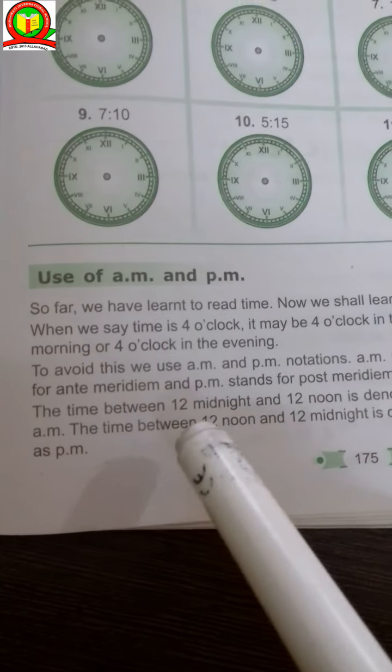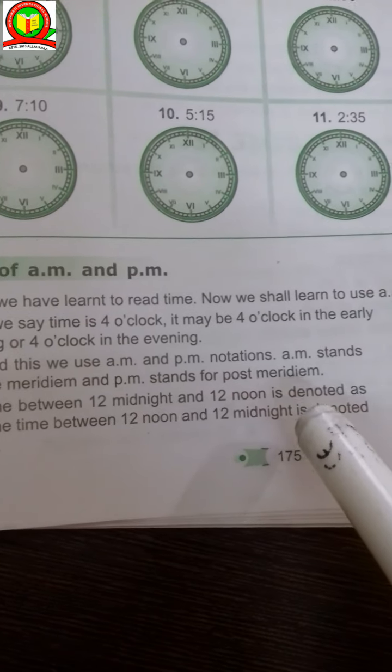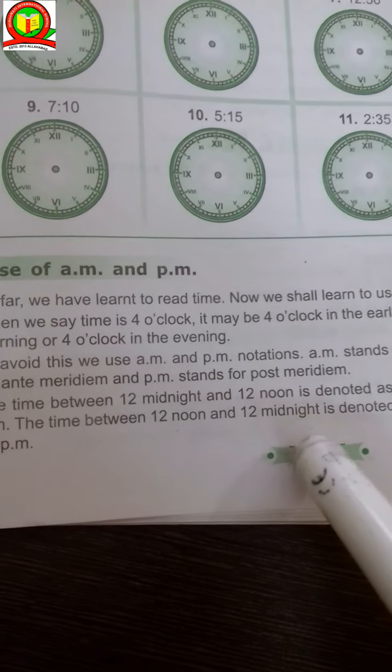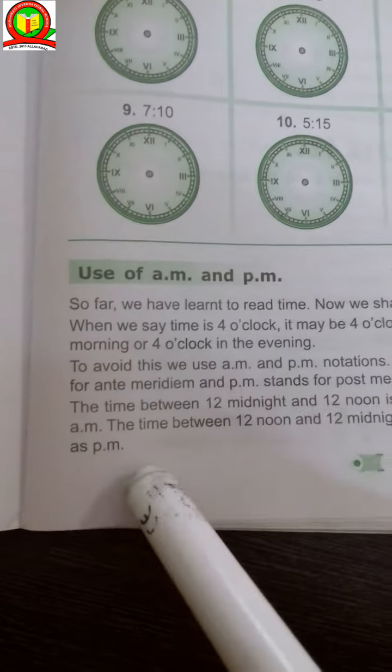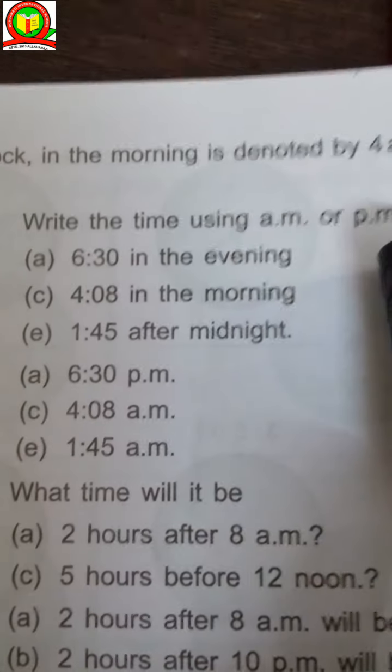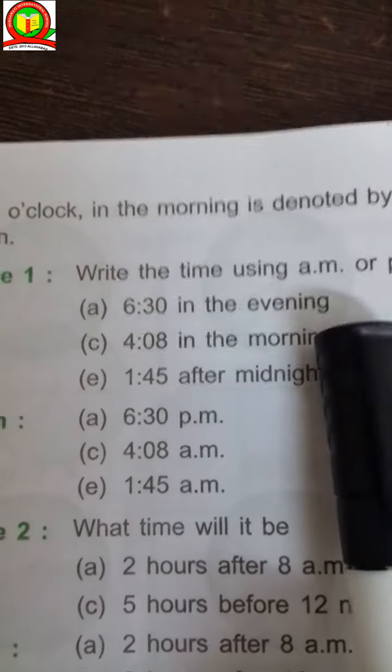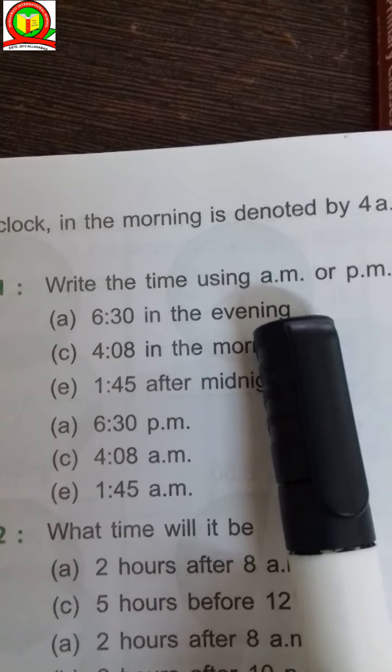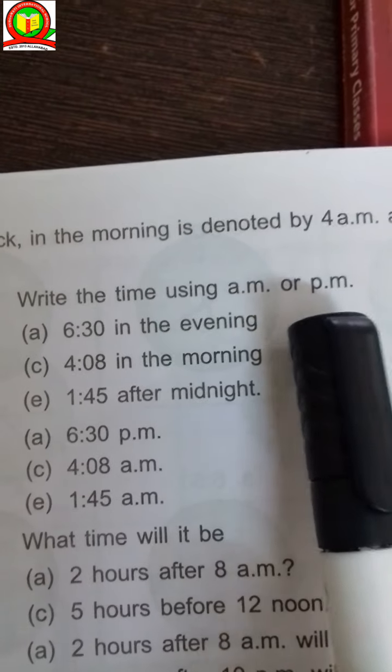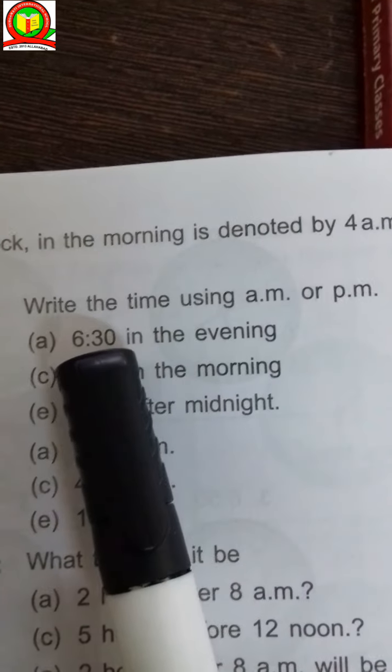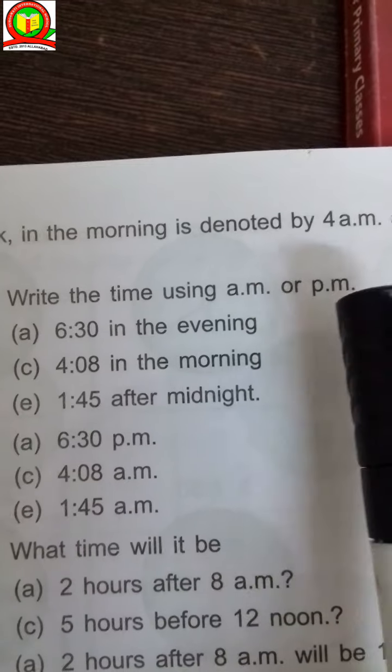The time between 12 midnight and 12 noon is denoted as a.m. The time between 12 noon and 12 midnight is denoted as p.m. Write the time using a.m. or p.m. If the time is 6:30 in the evening, the timing is 6:30 p.m. After 12 noon, we are counting it's p.m. 6:30 in the evening means 6:30 p.m.